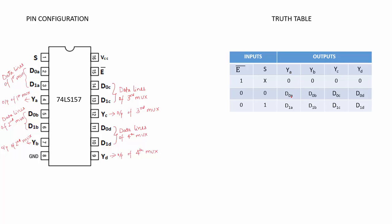When E-bar is 0 and S is 0, YA becomes D0A, YB is D0B, YC is D0C and YD is D0D. Similarly, when E-bar is 0 and S is 1, D1 gets connected to the output, so YA will be D1A, YB will be D1B, YC will be D1C and YD will be D1D.